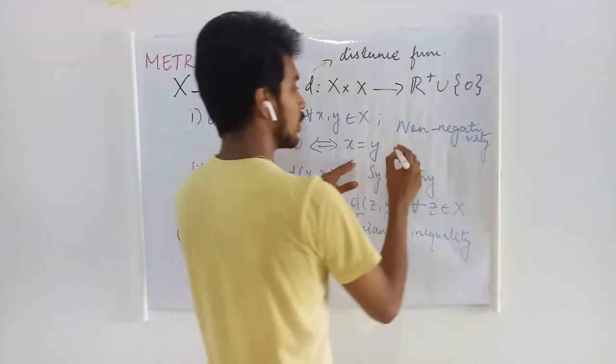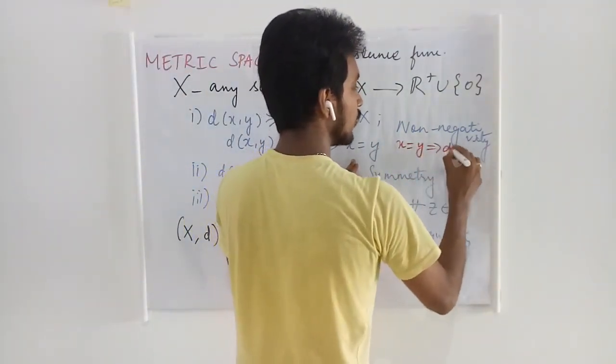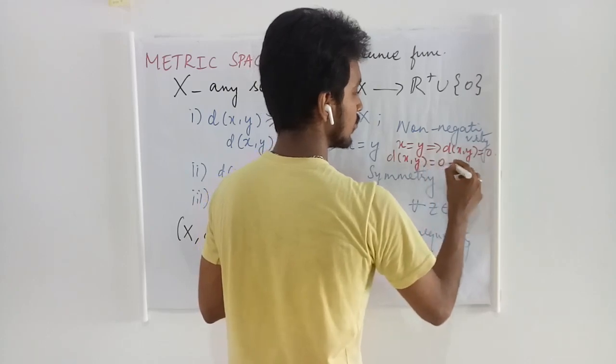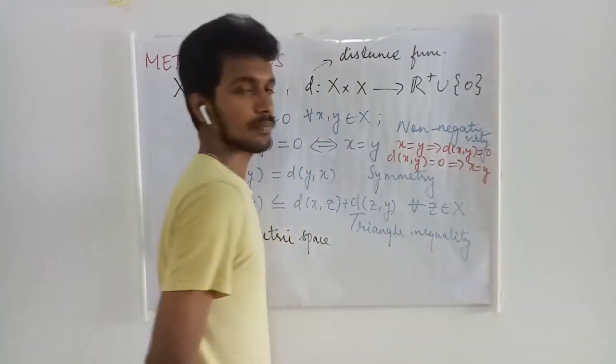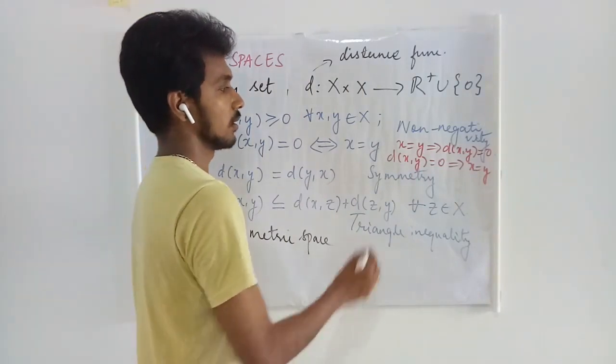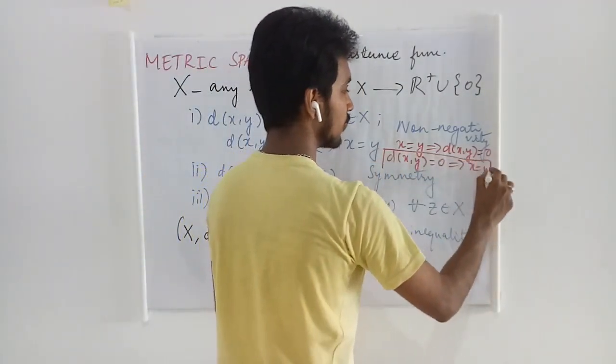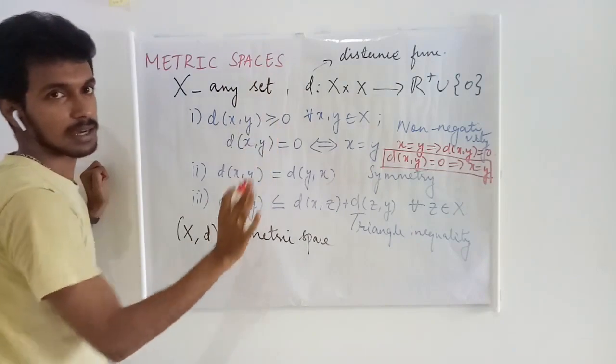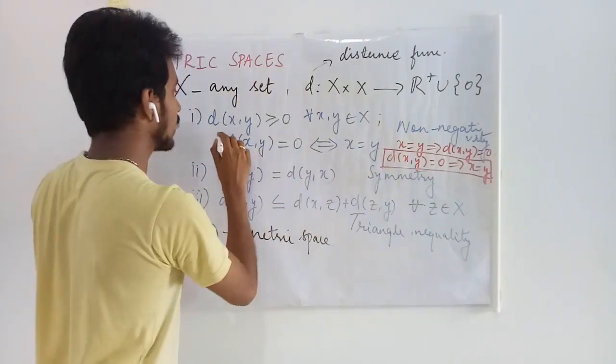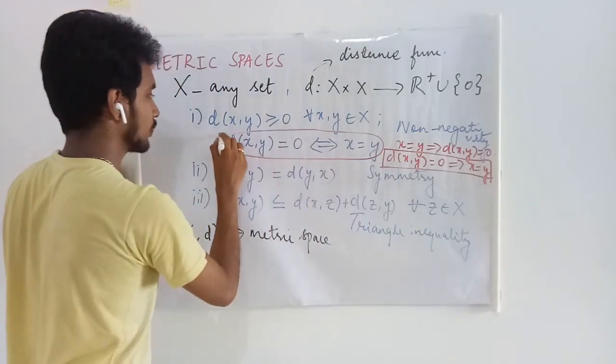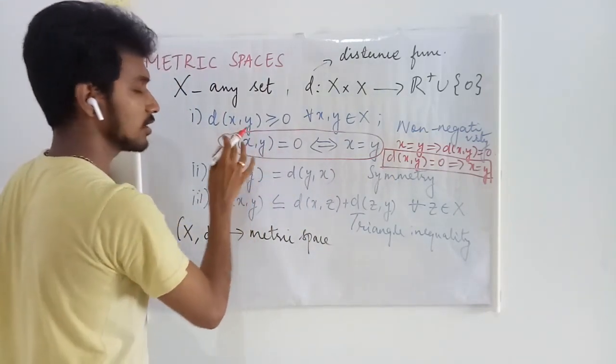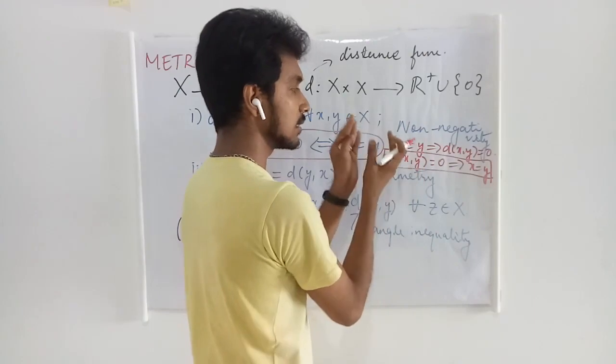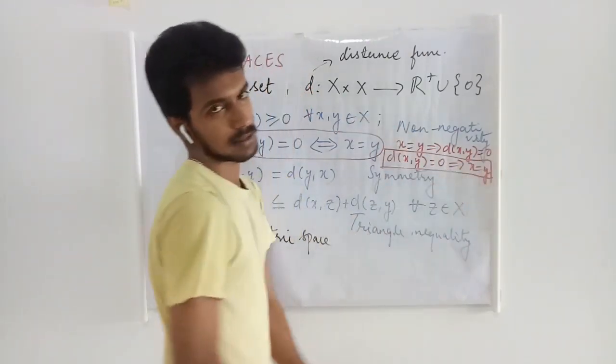Whenever you take x and y are the same, that will give you distance is zero. But is this always true? No, this may not be the case in some situations. Apart from this, all other things will be satisfied. If we relax this condition, meaning we have x and y are the same implies distance is zero, but distance is zero need not imply x and y are the same.